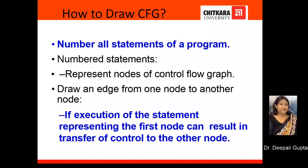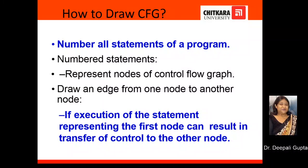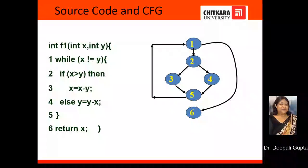The next question is how to draw a control flow graph. Given a program, the first basic step is to number all the statements of a program. Then these numbered statements are represented by nodes of the control flow graph, and after that draw an edge from one node to another node. We will try to convert this source code into a control flow graph.